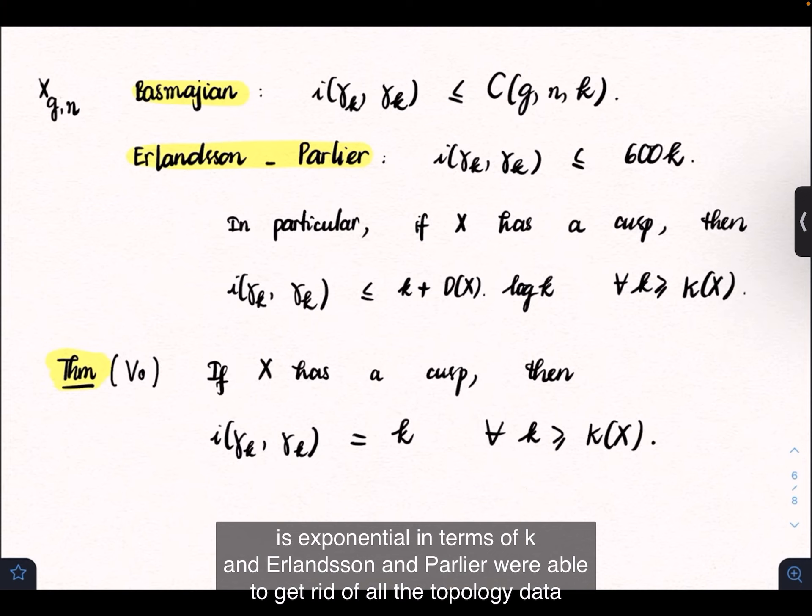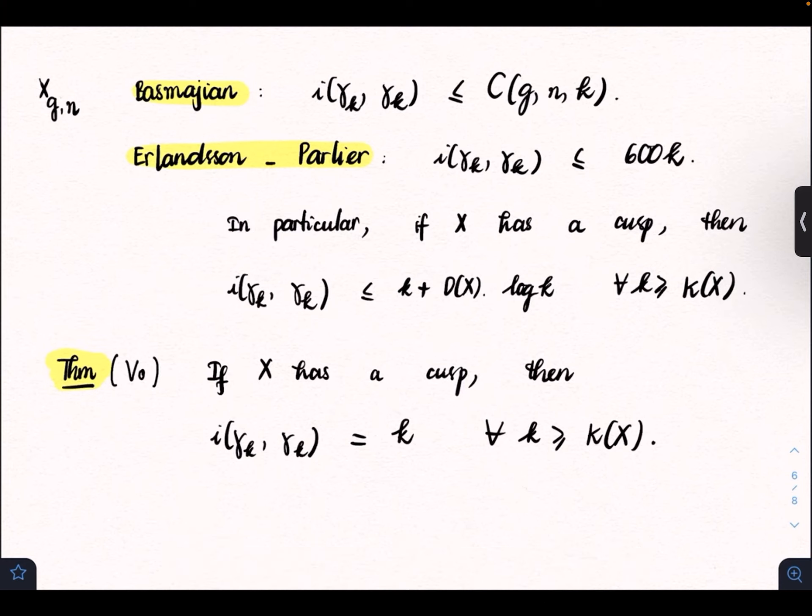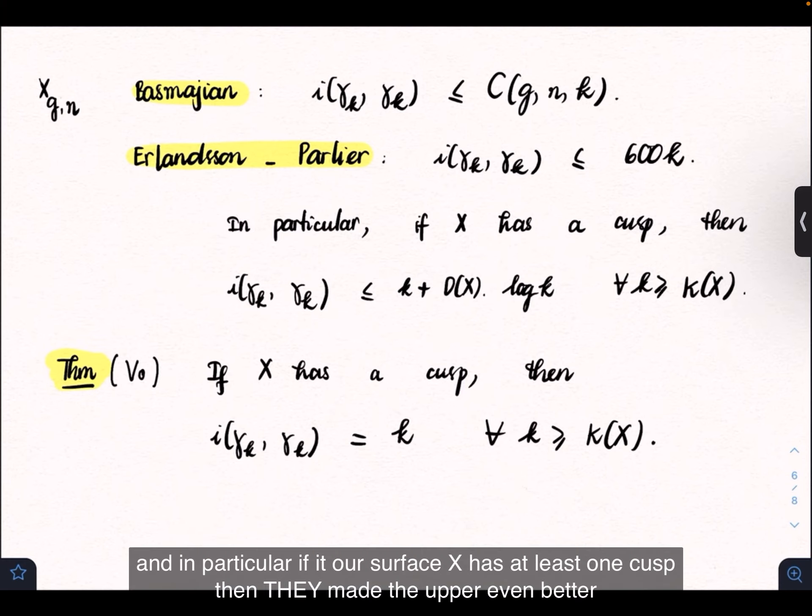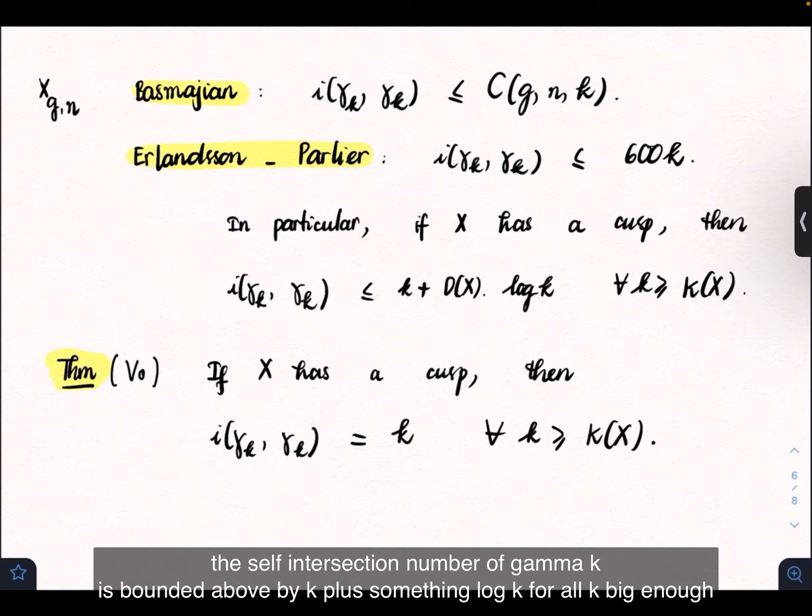Erlandsson and Parlier were able to remove dependence on the topological data. They proved that the self-intersection number of gamma_K is bounded from above by 600K. In particular, if our surface X has at least one cusp, then we can make this upper bound even better. The self-intersection number of gamma_K is bounded by 4 + O(K) log K for all K large enough.